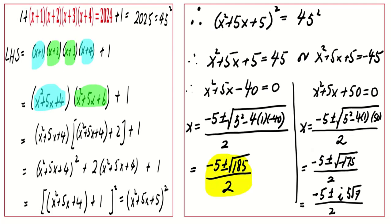Thus, we have obtained two real and two non-real solutions to the original equation (x + 1)(x + 2)(x + 3)(x + 4) = 2024.